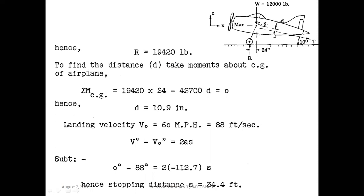To find the distance D, we take the moment about the center of gravity (sigma MCG = 0): R, that is 19,420, into 24 — force times perpendicular distance, clockwise, so positive — and T into the perpendicular distance D, so T into D equals 0. From this you can find D.